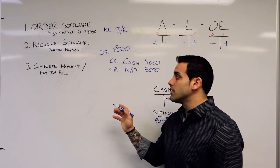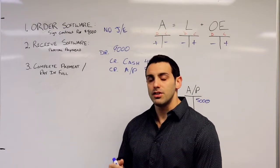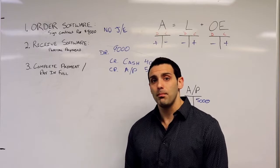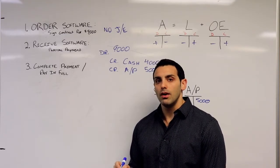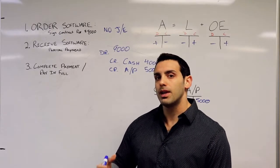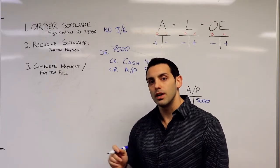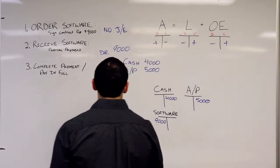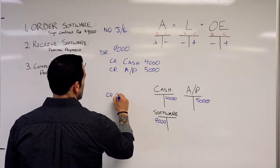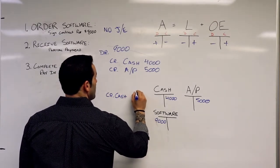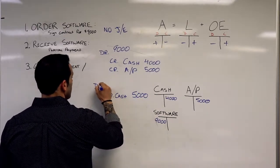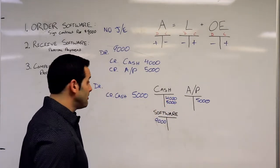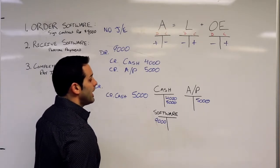Now the final transaction is that we're going to complete our payment to this particular vendor in the following month. What does the journal entry look like to complete that payment? Let's start with what we know. We're going to complete the payment, so therefore we are giving that vendor cash. Once again, we're going to decrease the asset because cash is an asset, so we're going to decrease it with a credit. Let's start there. We're going to credit cash for the remaining $5,000, and I'm going to add that to my T-account. I don't need to touch software.